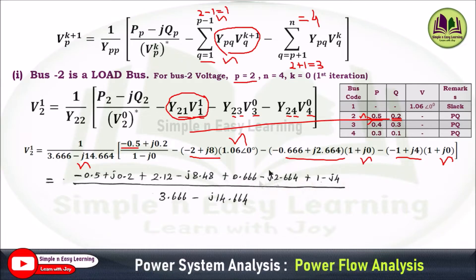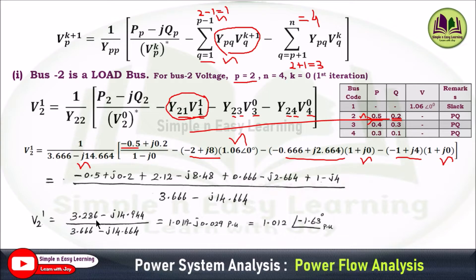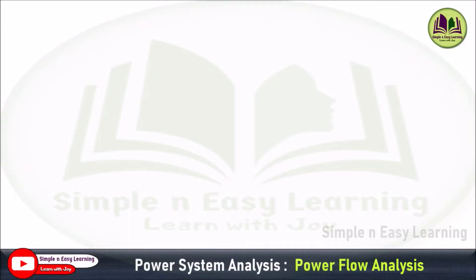The third and fourth terms are computed similarly. After simplification, the result is V2¹ = 1.0119−j0.029 per unit, or in polar form, 1.012∠−1.63° per unit. This gives us the bus 2 voltage at the end of the first iteration.